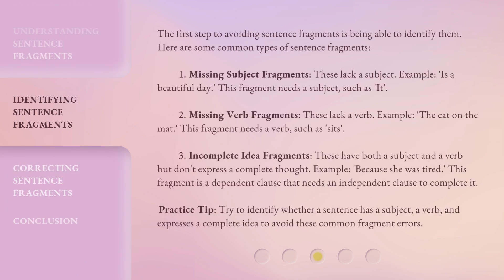The first step to avoiding sentence fragments is being able to identify them. Here are some common types of sentence fragments. First: Missing subject fragments. These lack a subject. Example: "is a beautiful day." This fragment needs a subject, such as "it."